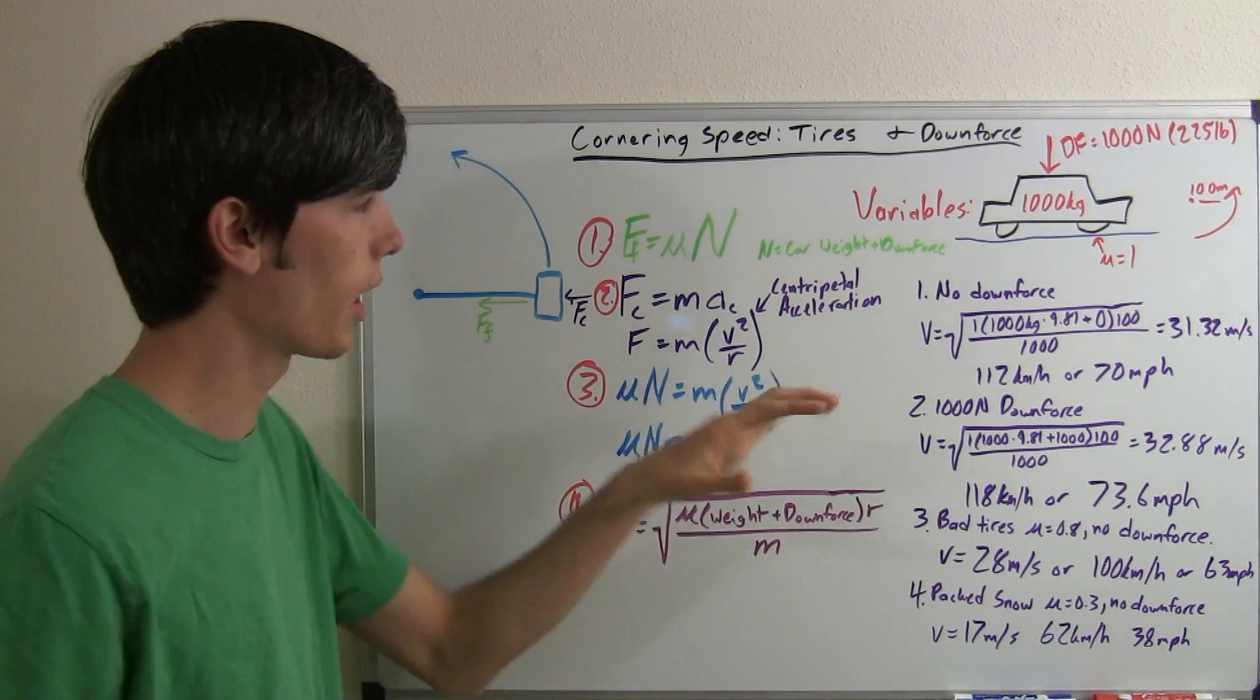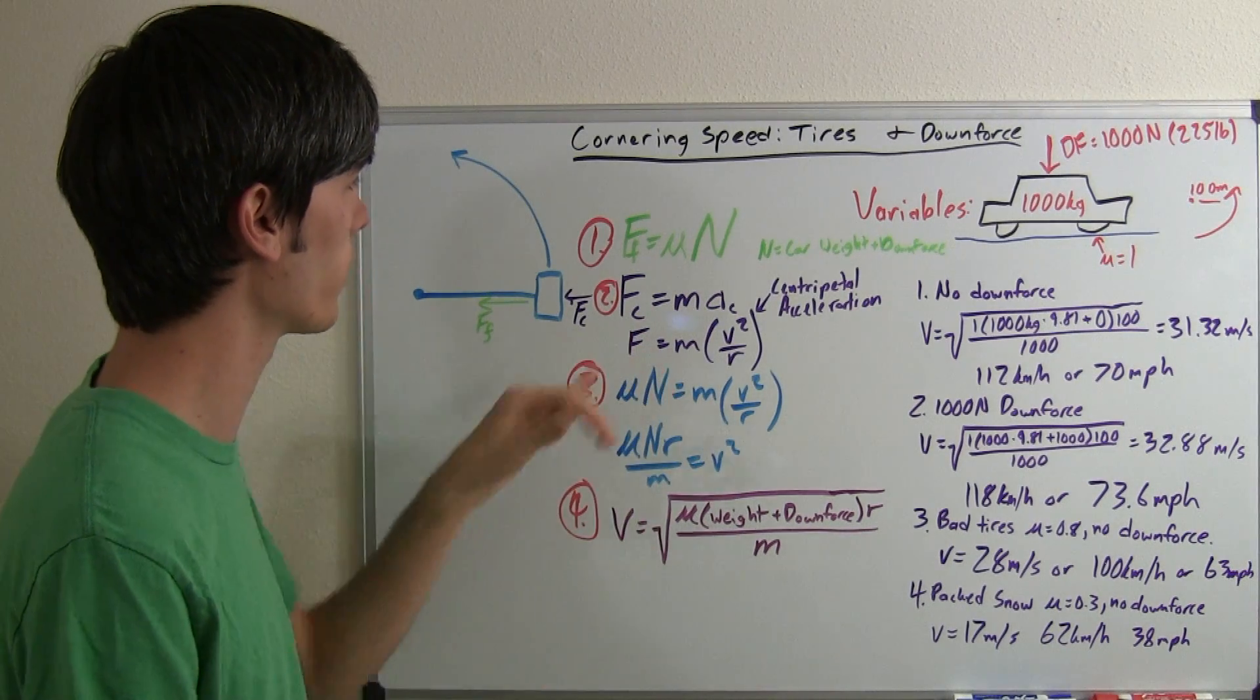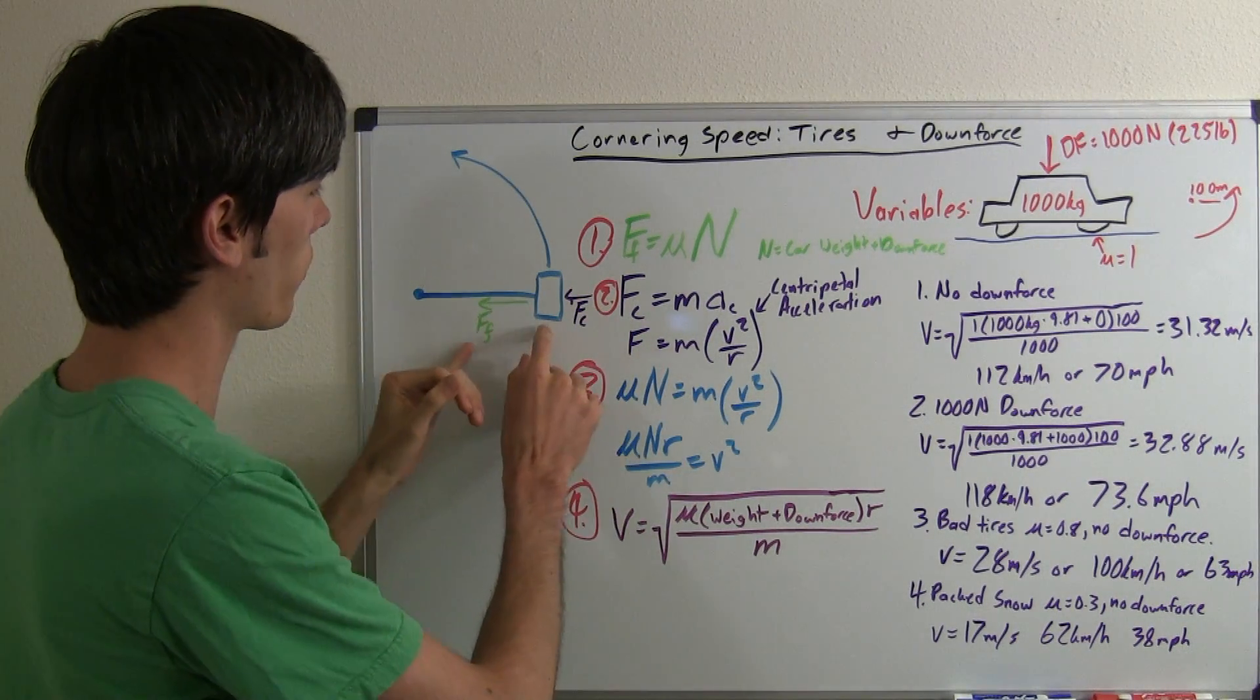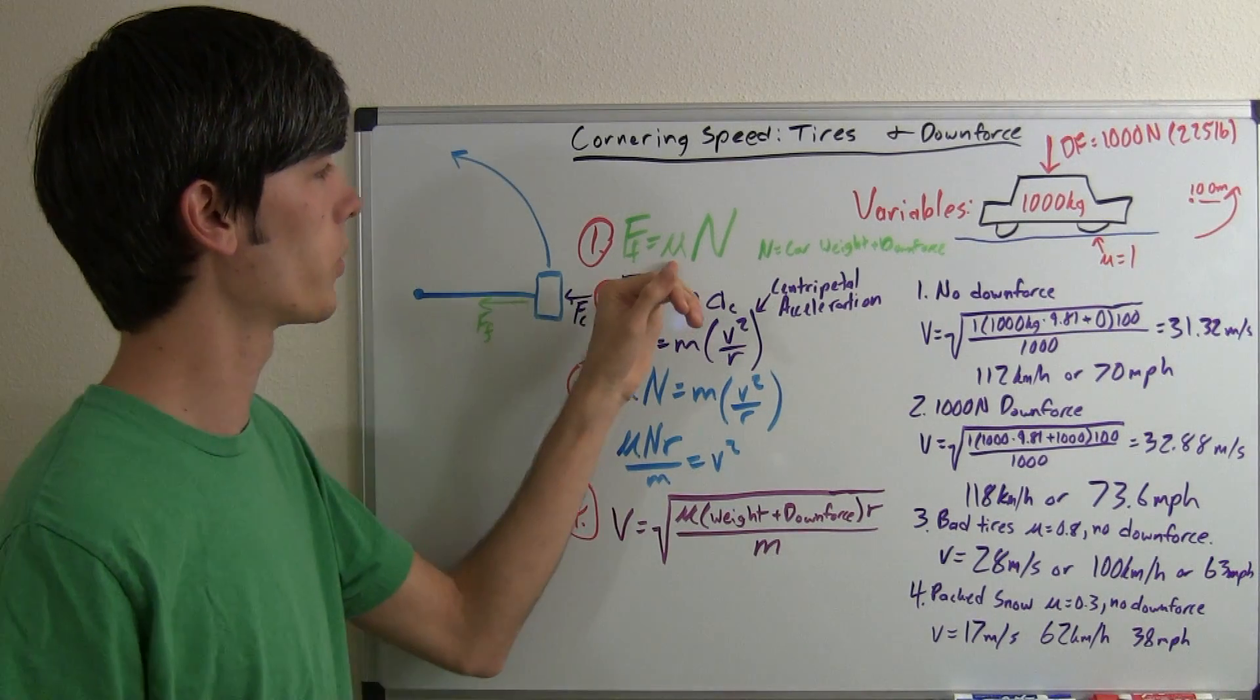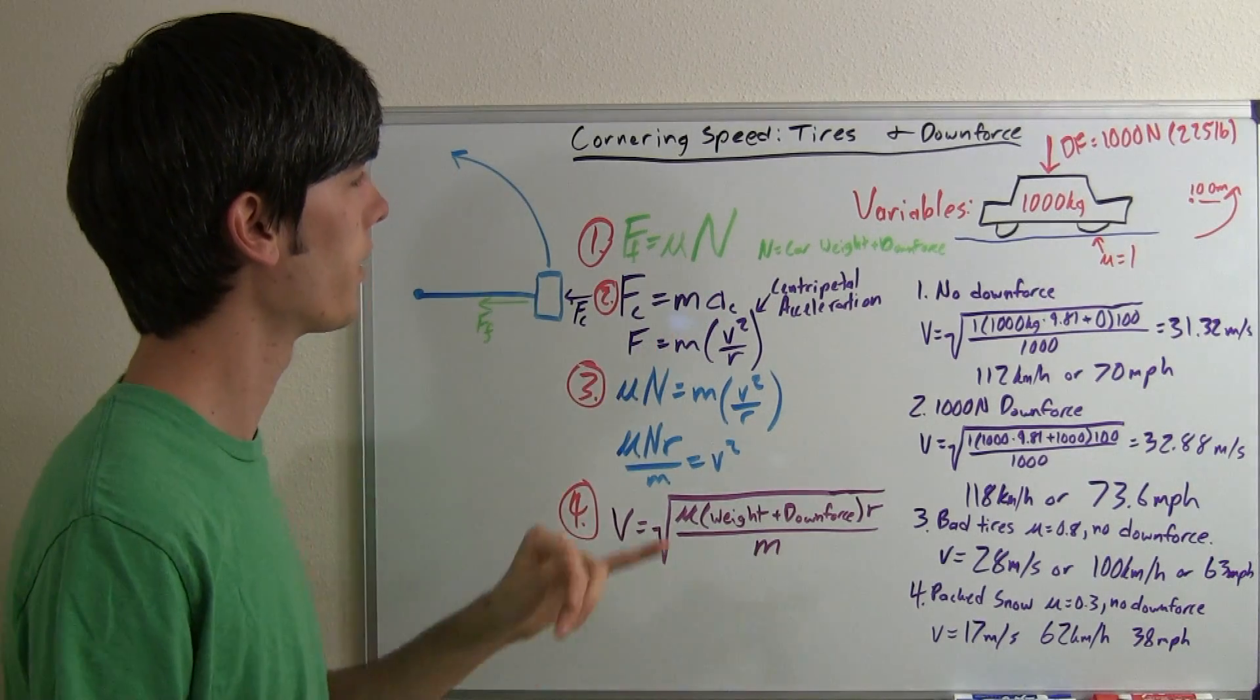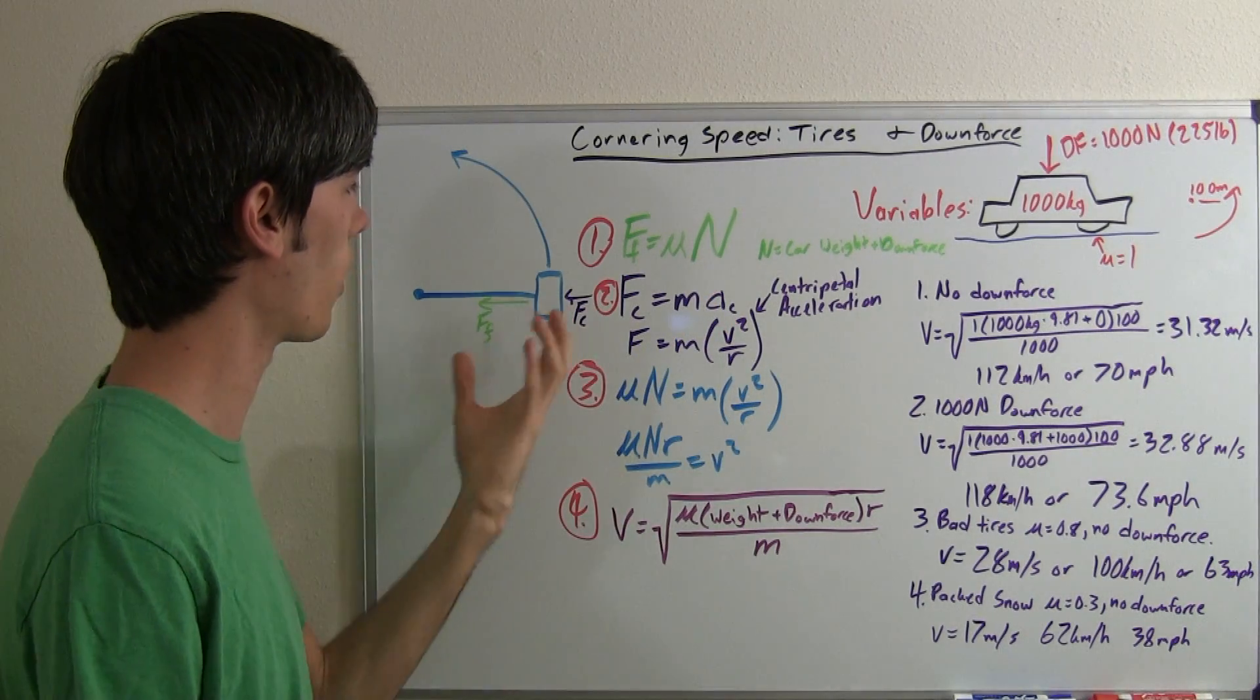Now one of my most common equations that I reference is the friction force equation, which tells us that the friction force of the tires on the ground of this vehicle are equal to the coefficient of friction of the tires multiplied by the normal force on the vehicle.